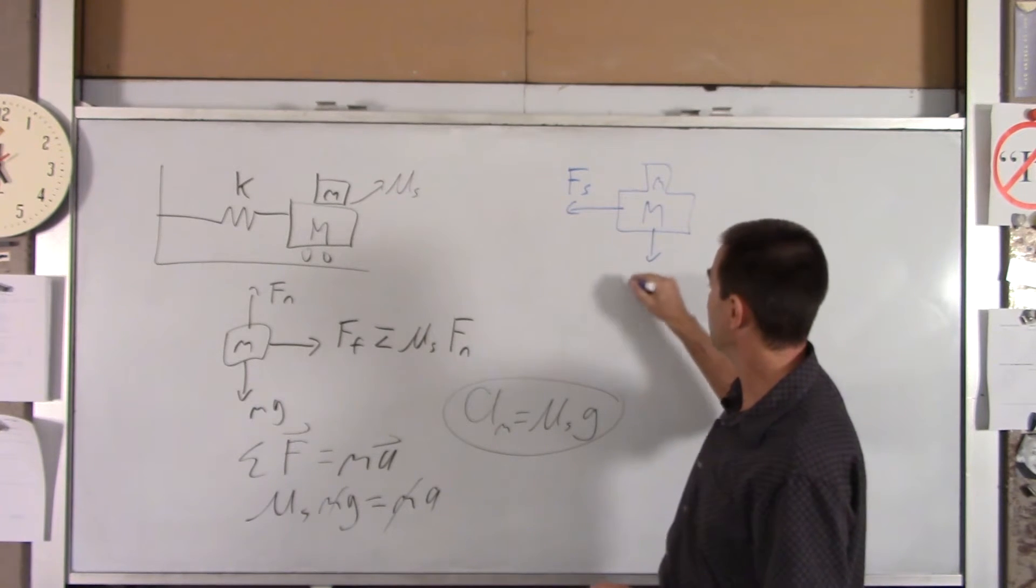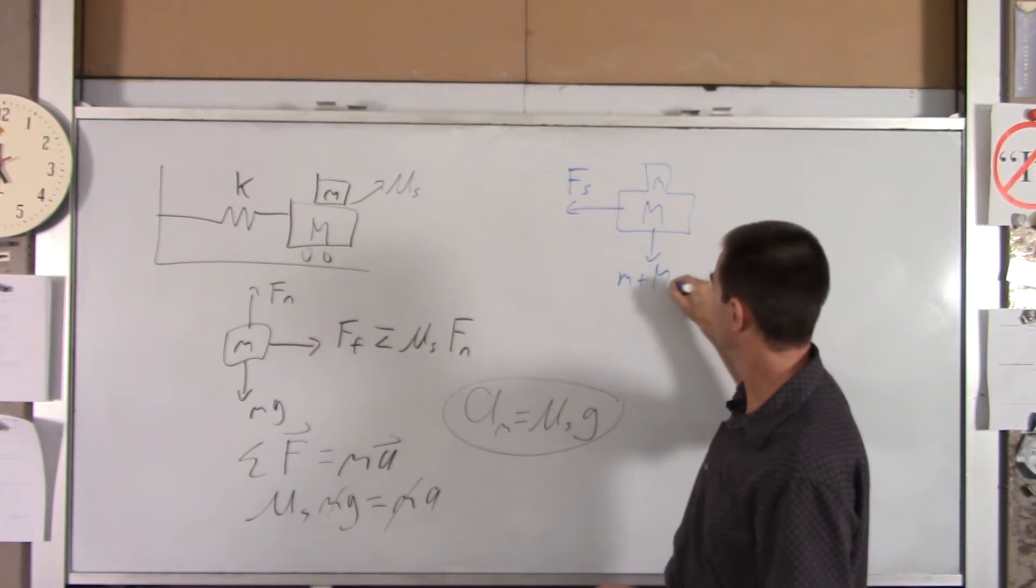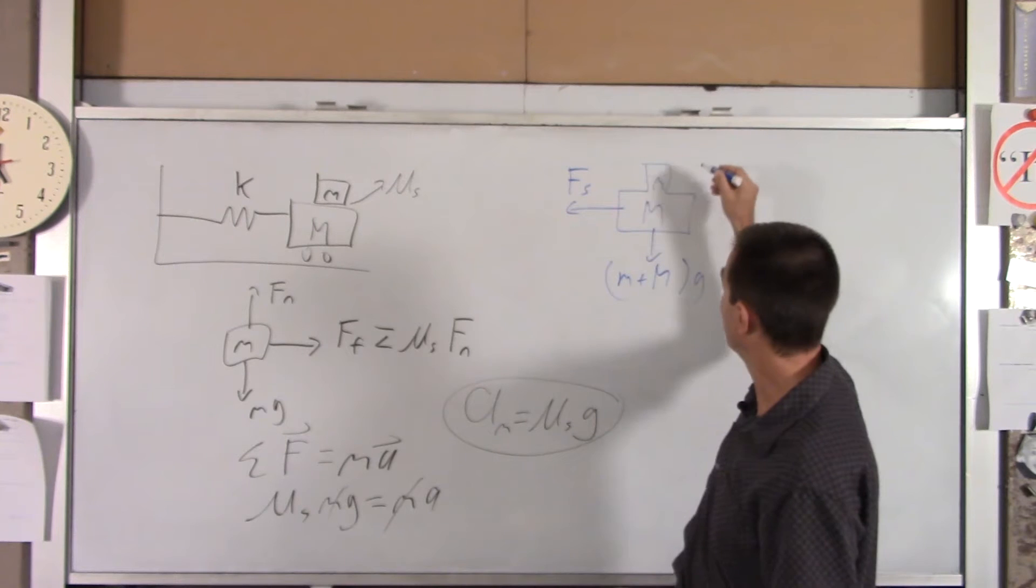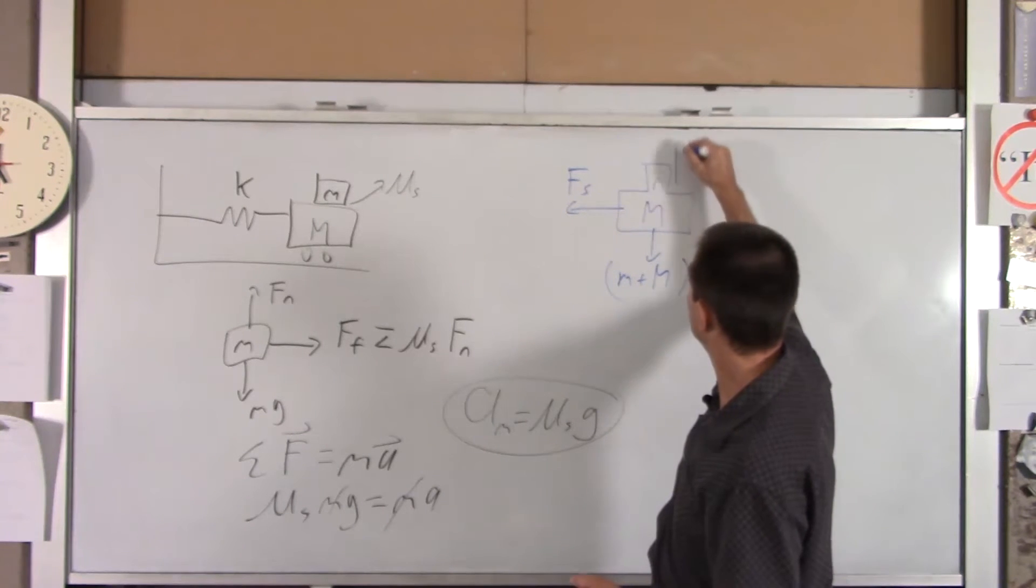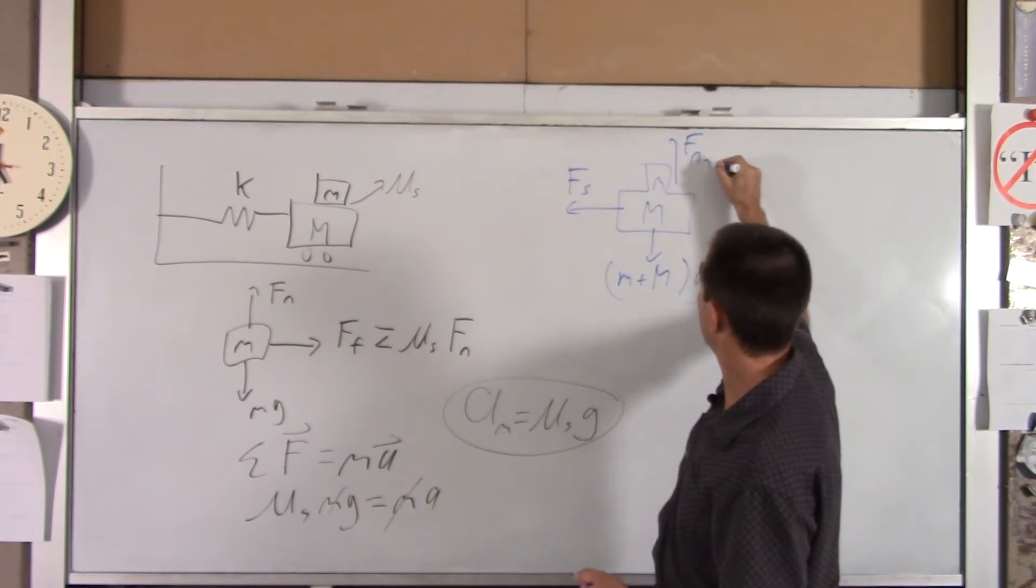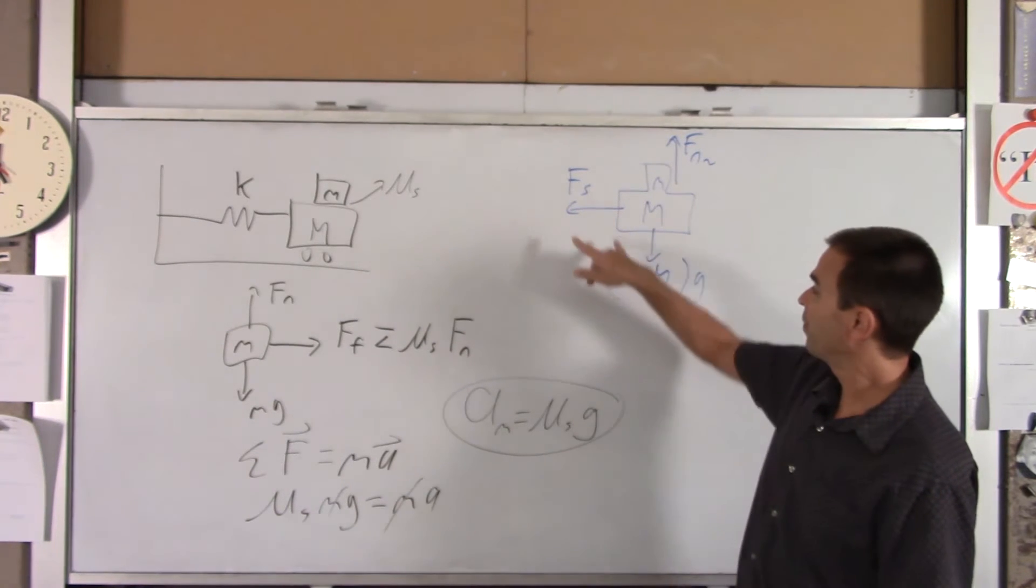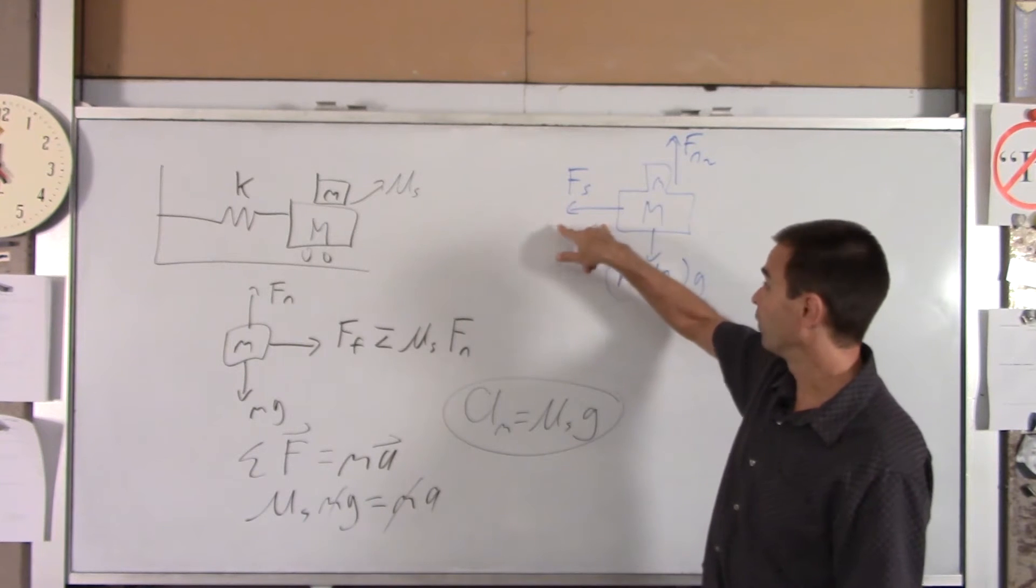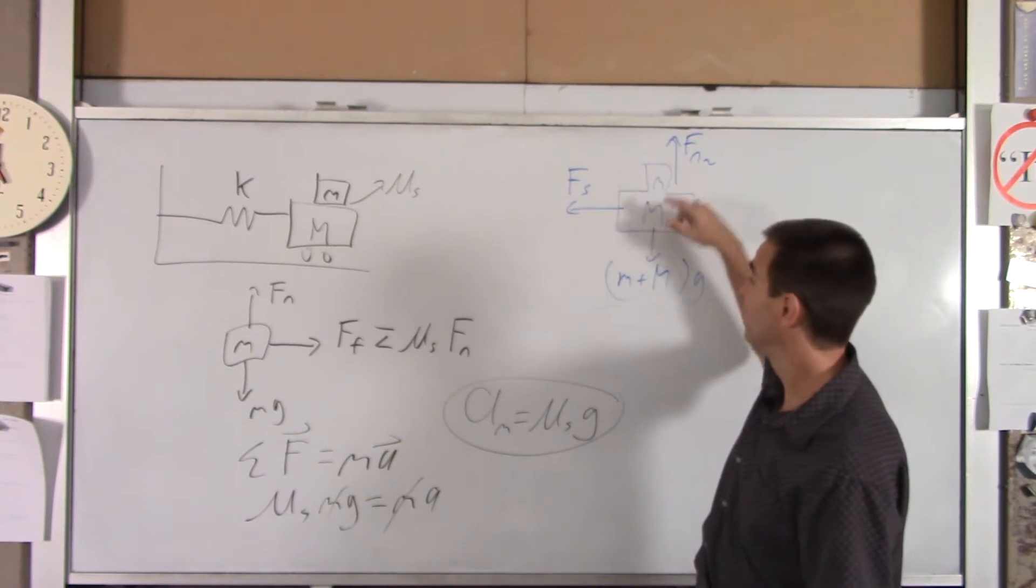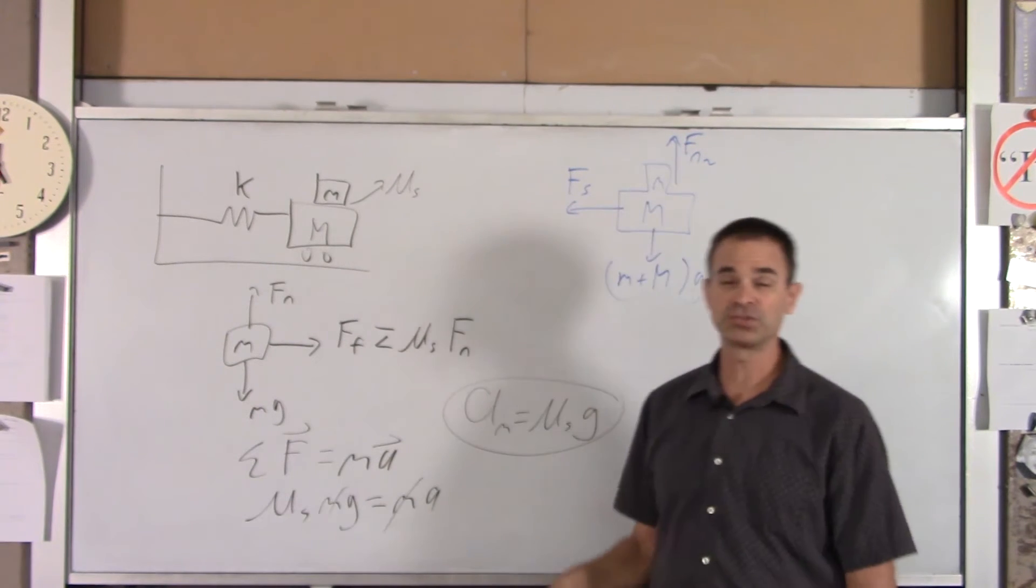You've got big M plus little mg acting down. You have a normal force acting up. I'll call that Fn2. That's the table holding the cart up. But really, the only force that we're interested in is this force. If I look at the two-block system, that's the only horizontal force external to it.